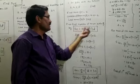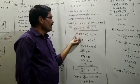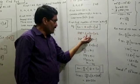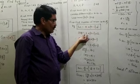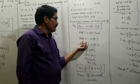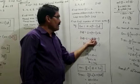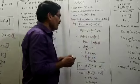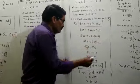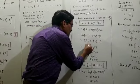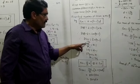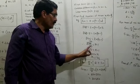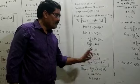TN equals A plus N minus 1 into D. Last term is 348, A is 2, D is 2. So 348 equals 2 plus N minus 1 into 2. Transposing plus 2, it becomes minus 2: 348 minus 2 equals 346. Then 2 multiplied by N minus 1 equals 346. Dividing both sides by 2 gives N minus 1 equals 173. Transposing minus 1, we get N equals 174.